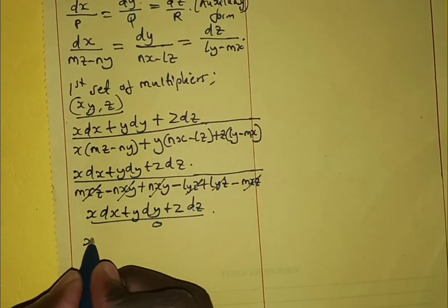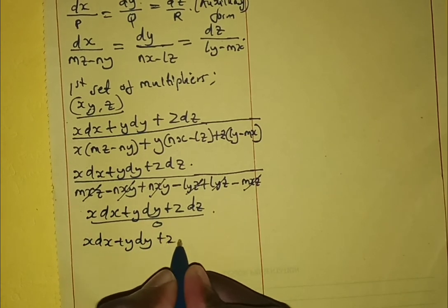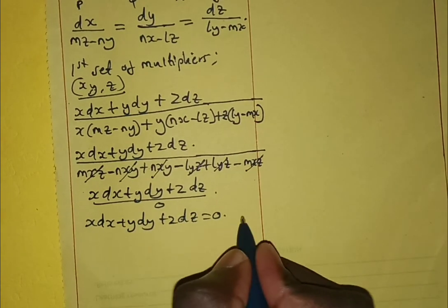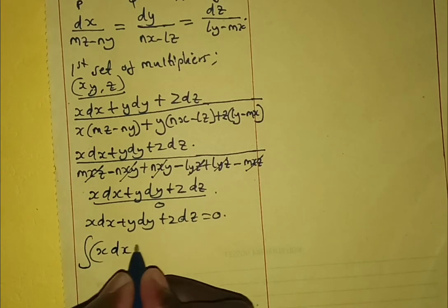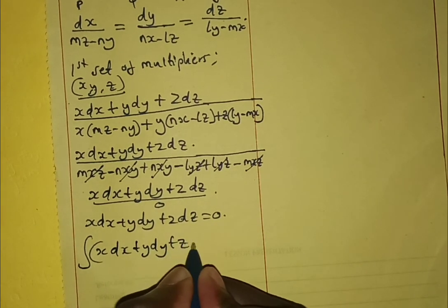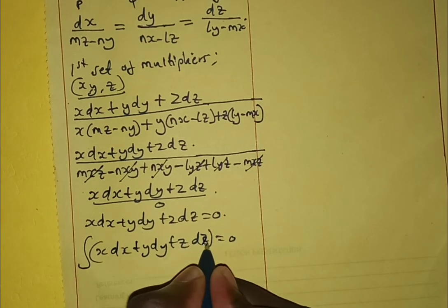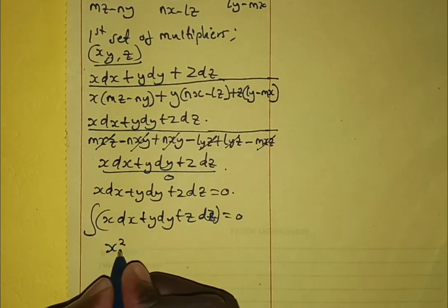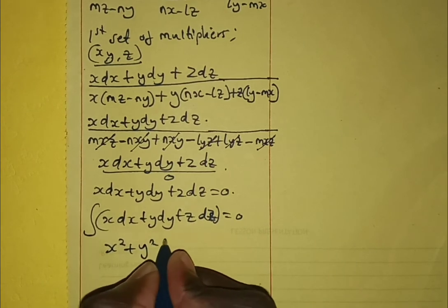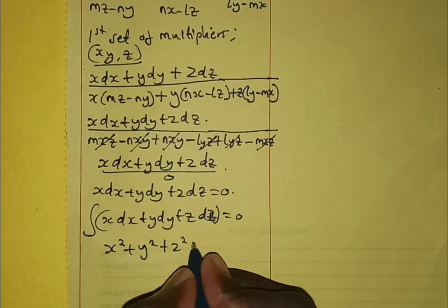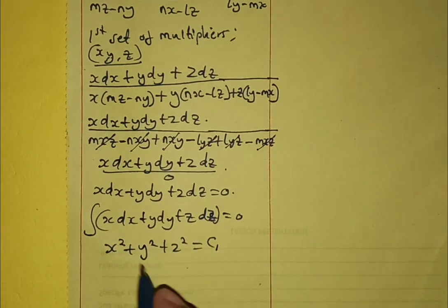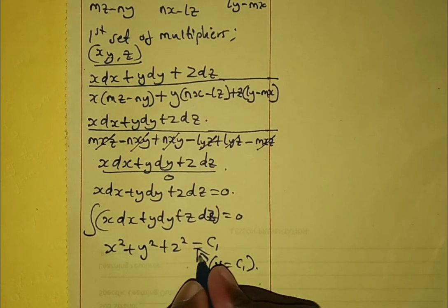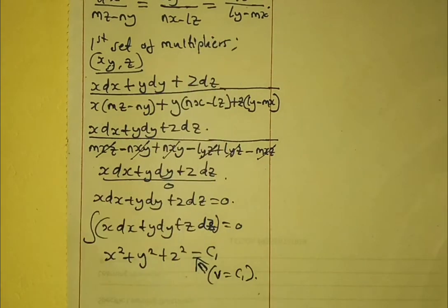This is the same as x dx plus y dy plus z dz equals zero. We now integrate this equation. Integrating gives us x² plus y² plus z² equals c₁. This is our first solution, which we can call v equals c₁, obtained using the first set of multipliers.